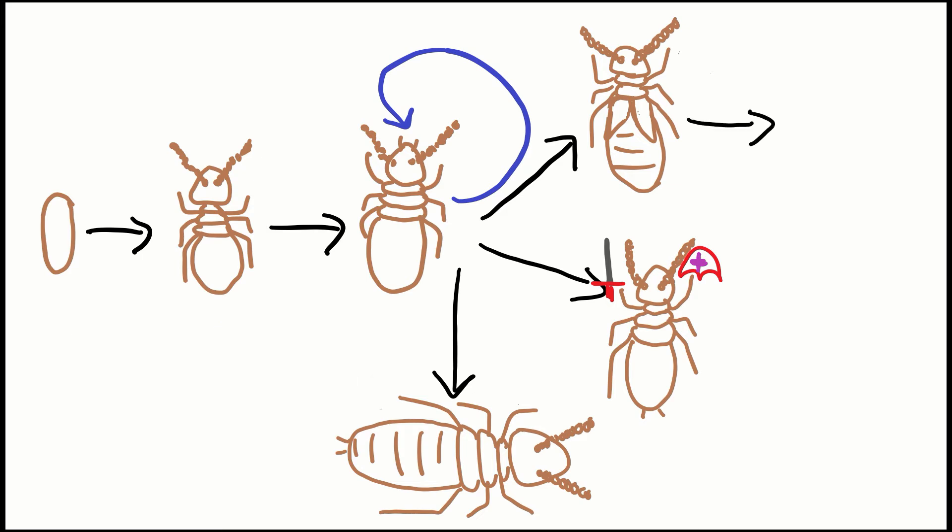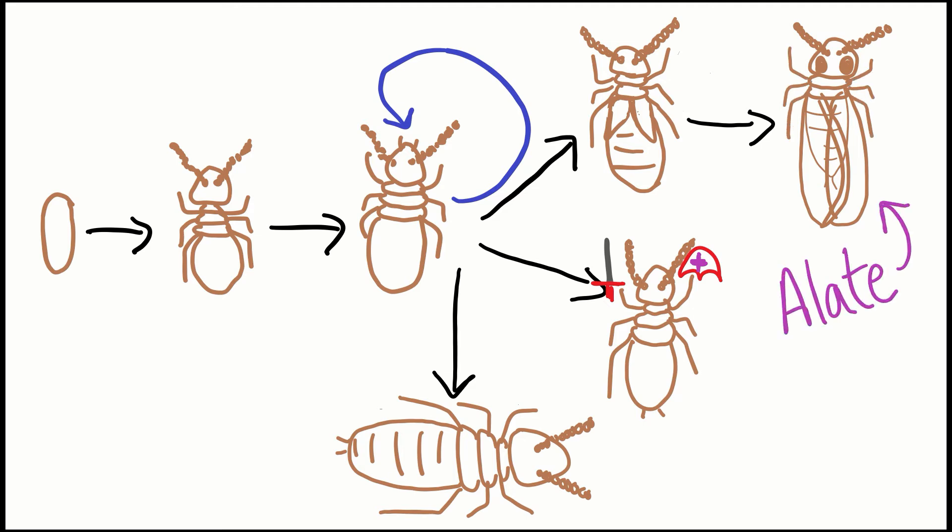If a termite has molted into a nymph with wing buds, it is only one molt away from being an elate. An elate is a fully reproductive adult termite with a hardened body, four full-length wings, and compound eyes. These individuals get to fly through the air in large mating swarms and start new colonies.